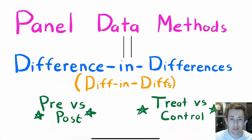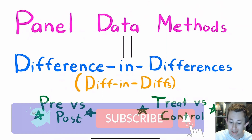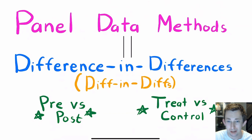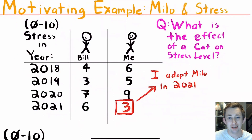Hi guys, welcome back to a case of econ struggles — welcome to another causal inference struggle. Today I'm talking about panel data methods or difference-in-differences estimation. The point of going through these videos is so that as you are trying to estimate a causal model, you can understand exactly what your method is doing, how you're getting your estimates, as well as the assumptions going into those methods. Timestamps are below if you'd like to jump around, but let's jump right into it. We'll start with this motivating example.